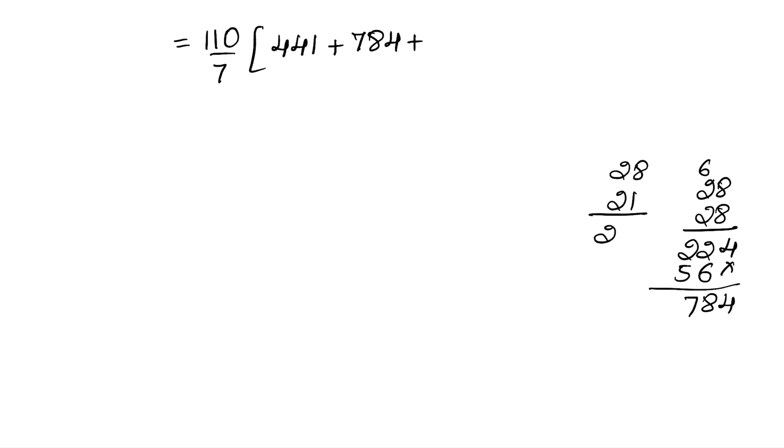Plus 21 into 28, which equals 588. Now adding these: 441 plus 784 plus 588.